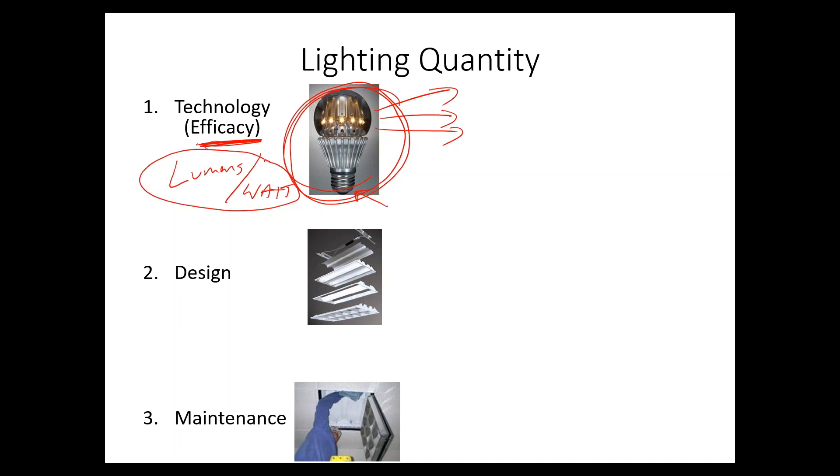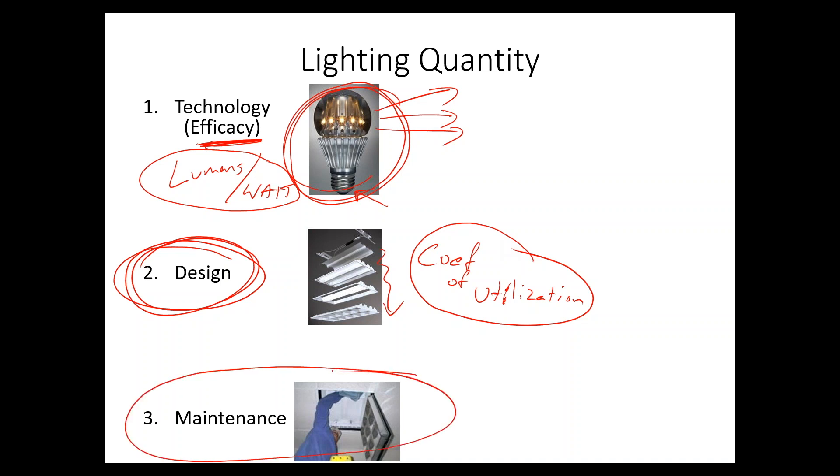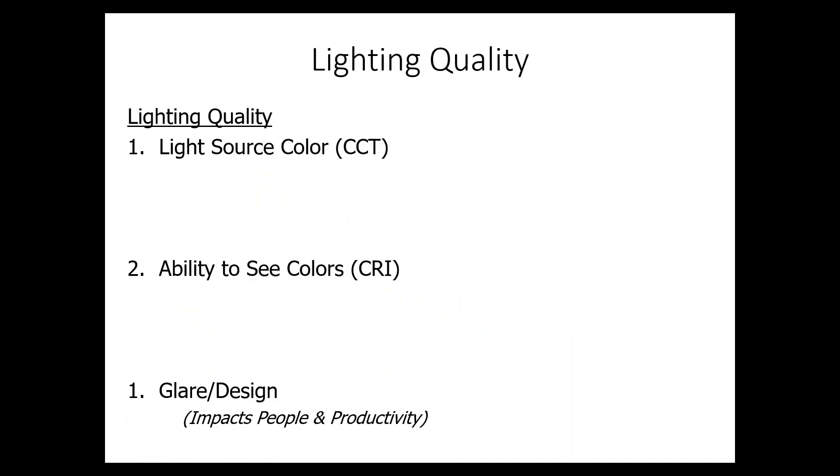Then, the light has to escape the fixture, which is where we're going to talk about design. The light has to get through all these baffles and get to the target, and there's a term there called coefficient of utilization, which is somewhat like the delivery efficiency, and this relates to the fixture. Finally, third thing is the maintenance. If we clean the fixture more often, we get more light out of it.